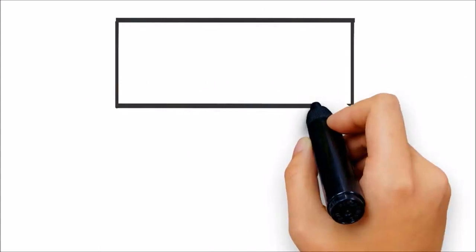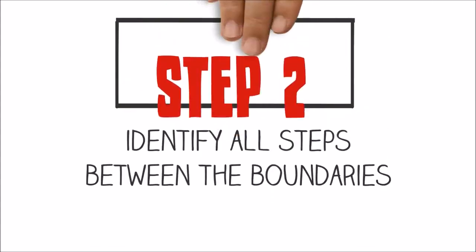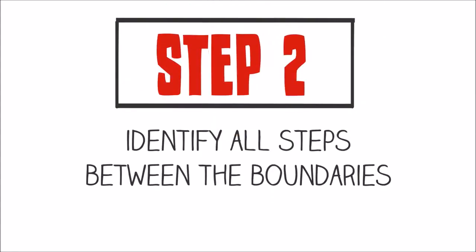Step 2: Identify all the steps between the boundaries. The level of detail should be such that the process is described in 3 to 10 steps. Steps should include all inspection points, rework, etc.